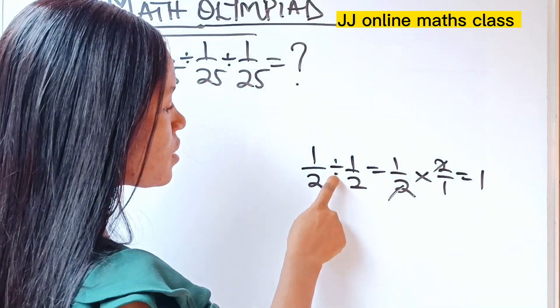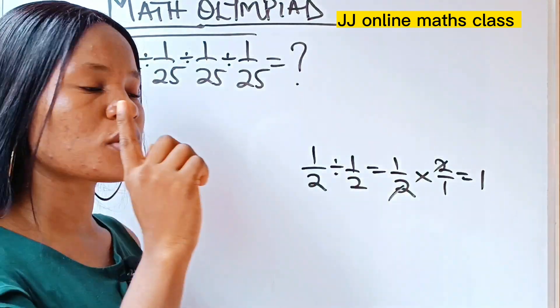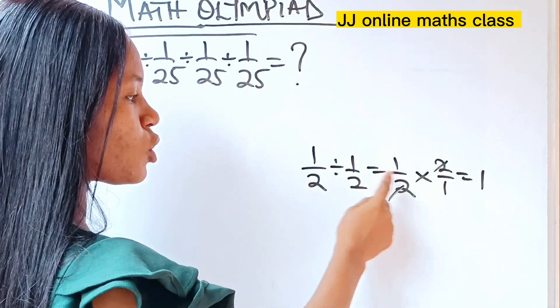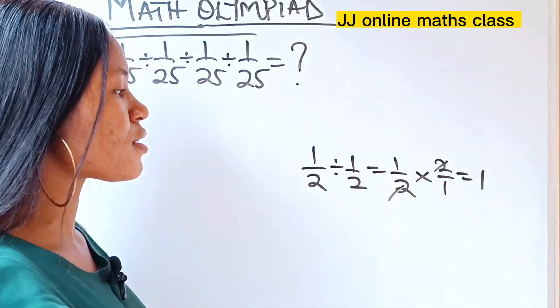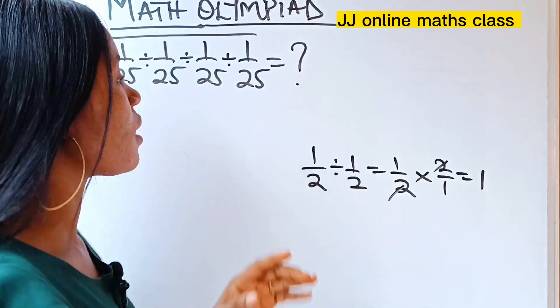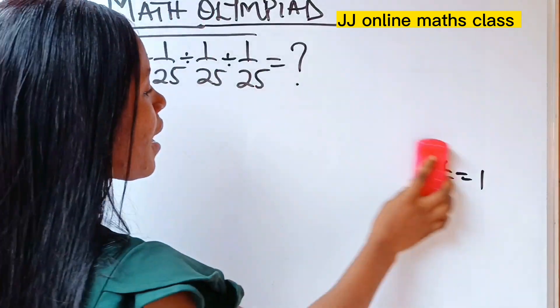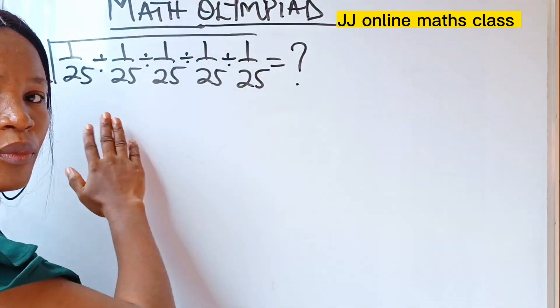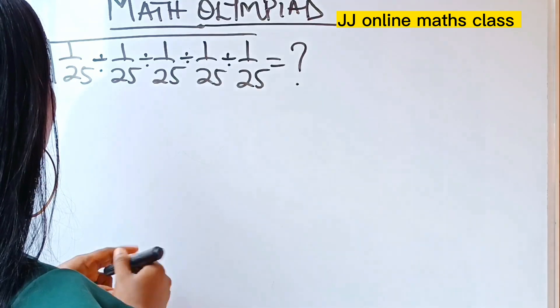So the essence here is that when you see division, you turn it to multiplication. But when you turn any division to multiplication, you have to take the inverse of any number or any fraction following your division sign. So we are going to apply exactly the same thing here. So applying that same thing here,